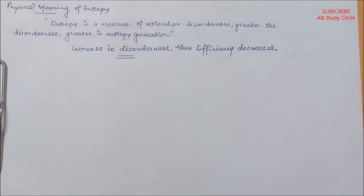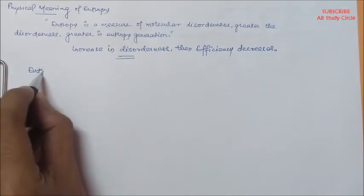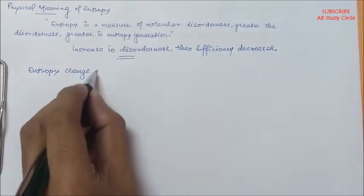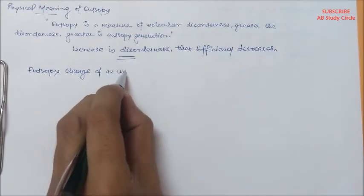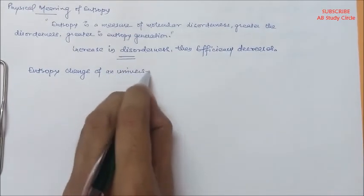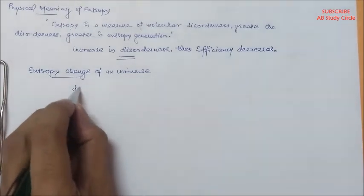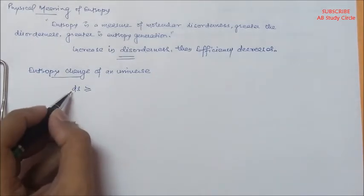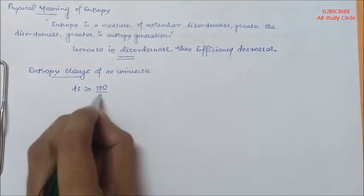Now let's talk about the entropy change of a universe. The entropy change is given as dS greater than or equal to dQ divided by T, for both reversible and irreversible processes. It's a combined formula.